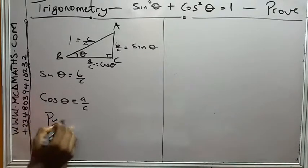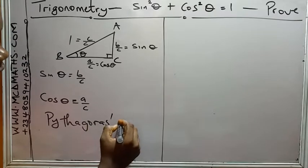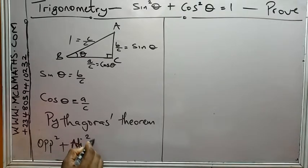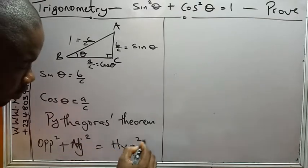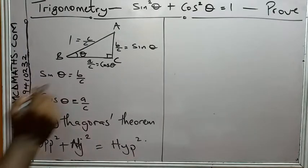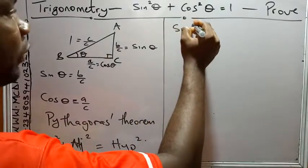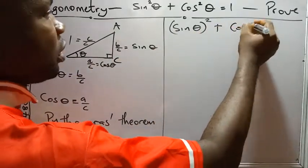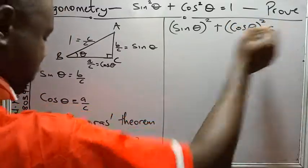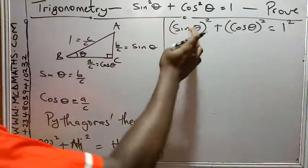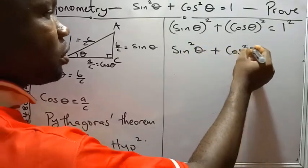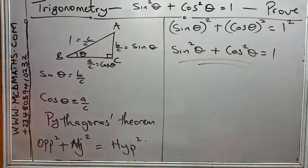So, from using your Pythagorean theorem, we know that the opposite squared plus adjacent squared equals to hypotenuse squared. Now the opposite square here is sin theta squared. Then, plus adjacent, this is the adjacent, cos theta squared equals to hypotenuse, which is 1 squared. So, another way of writing this is sin square theta plus cos square theta equals to 1 squared is 1. Perfect. Thank you. God bless.